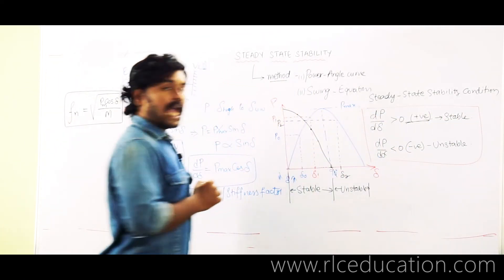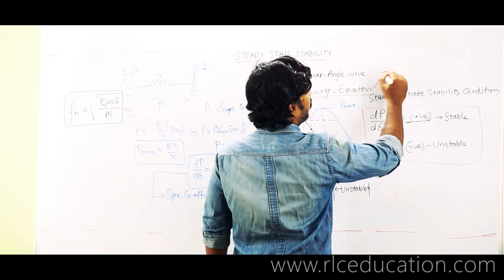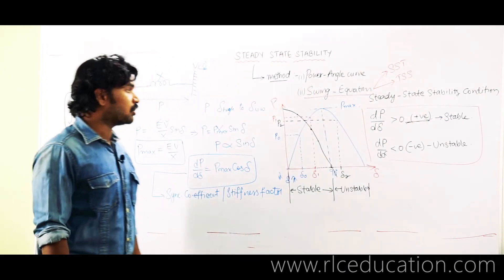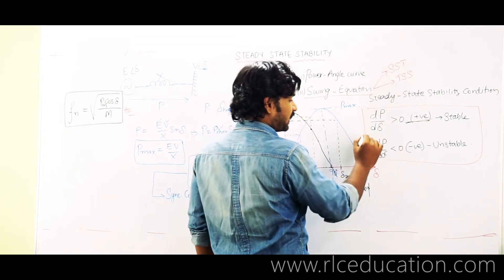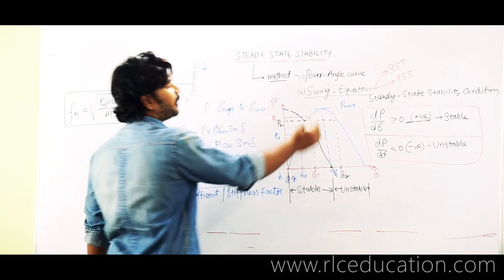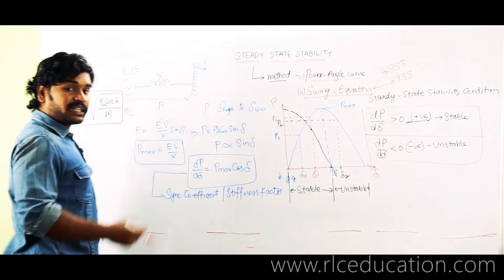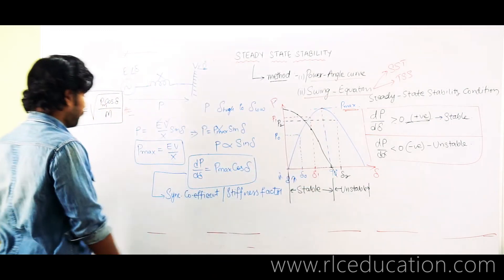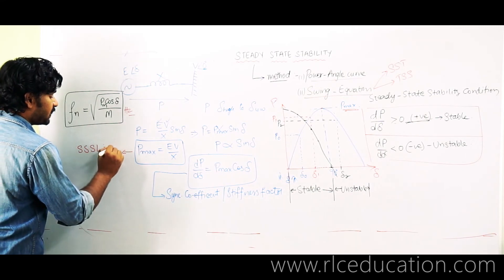This is the steady state stability condition with respect to the power angle curve. We will next study the swing equation, which helps in evaluating steady state stability as well as transient state stability. Using the swing equation, we will again arrive at the same condition: dP/dδ > 0 for the system to be stable. The maximum power that can be transferred before stability is lost is Pmax — this is also called the steady state stability limit.